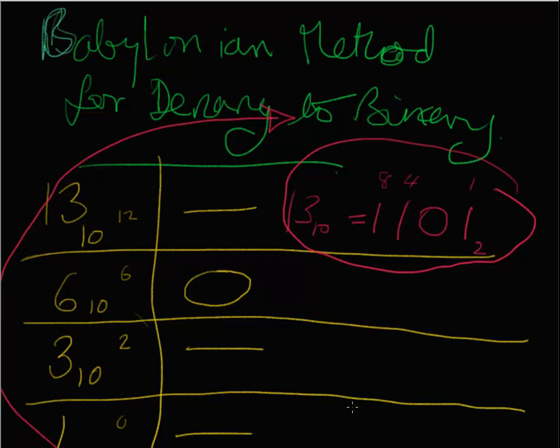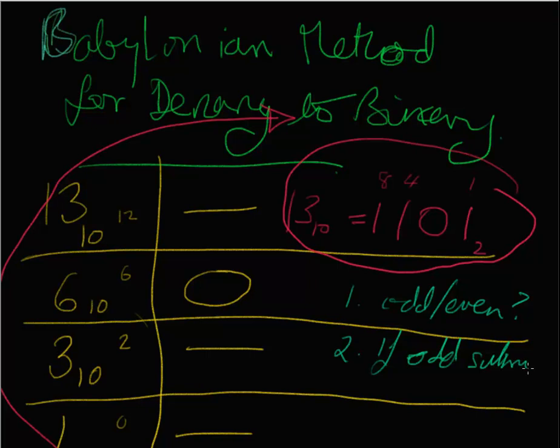And the amazing thing is this works for really large numbers too. But just to recap: first of all we ask the question, odd or even? And the answer here was odd, so the very first thing is 1. Odd or even is the question. Then if odd, we subtract 1, and we divide by 2. And we go round to here, do that again, and we do it until we come to 0.